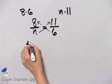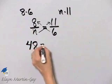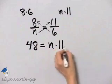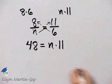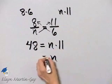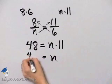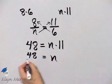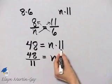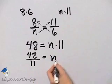8 times 6 is 48 is equal to n times 11. And how do we find the value of n? It will be the number not multiplied by n divided by that number that is multiplied by n.